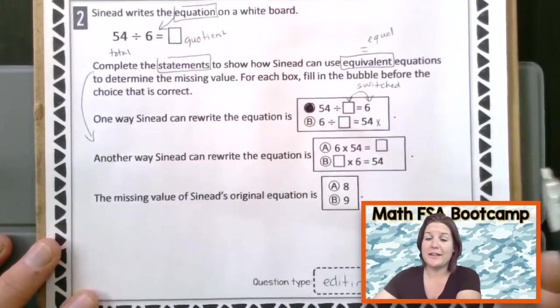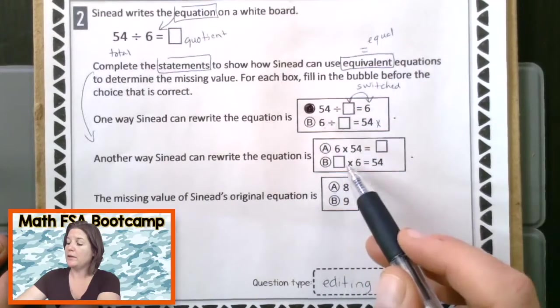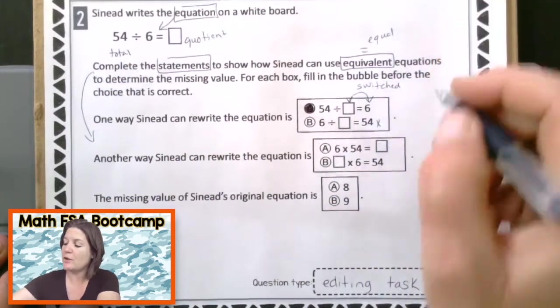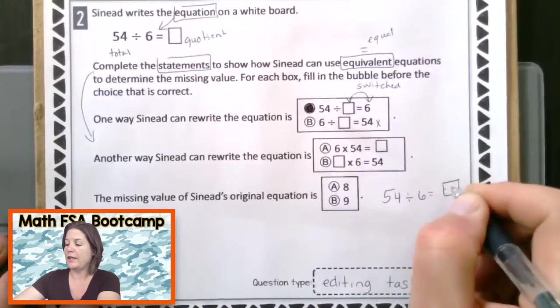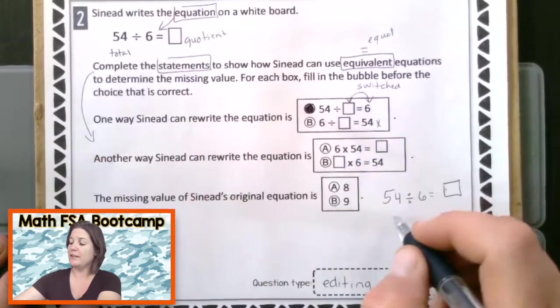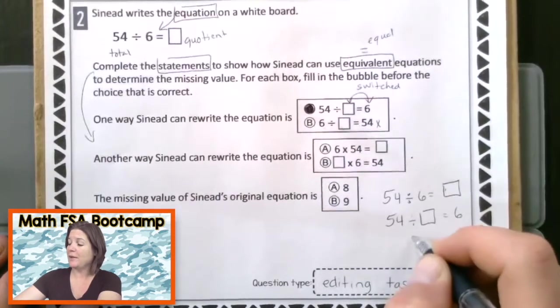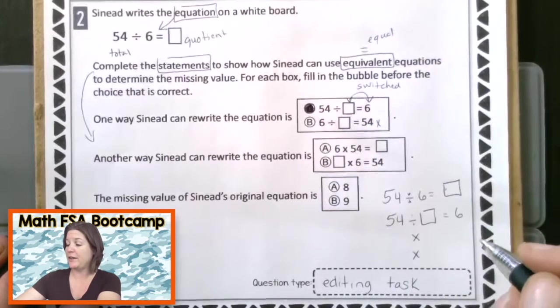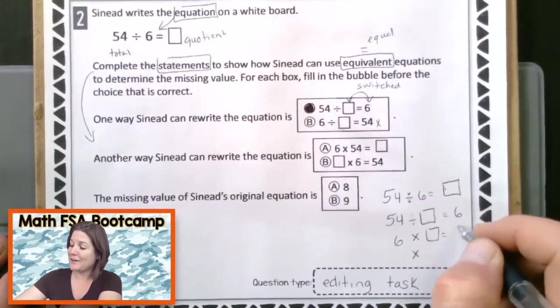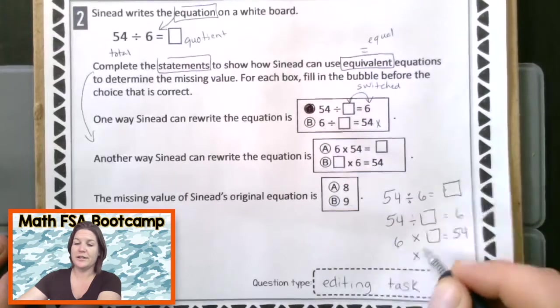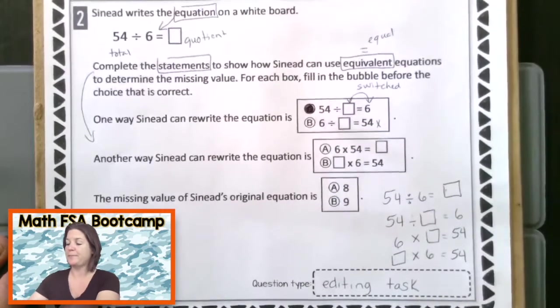Another way that Sinead can rewrite the equation is 6 times 54 equals blank or blank times 6 equals 54. You know what? Let's go ahead and just jot down all of the fact families here. So we got 54 divided by 6 equals blank. That was the one that they gave us up here. And then if we flip those around, that would be 54 divided by blank equals 6. Good. And we also have two multiplication families we can put there. So let's try 6, 6 times blank equals 54. Good. Or flip-flop these two factors. And we have blank times 6 equals 54. That's our fact family there.